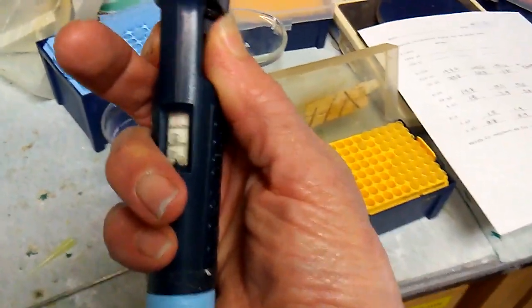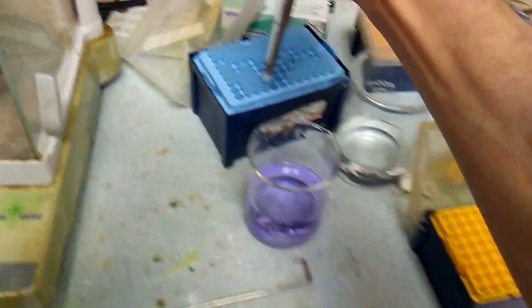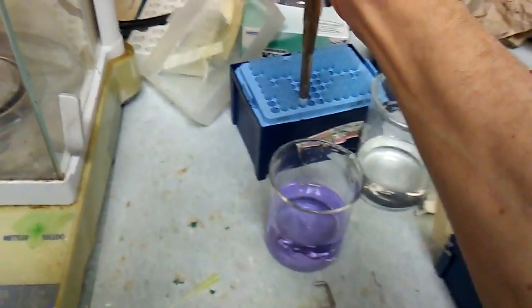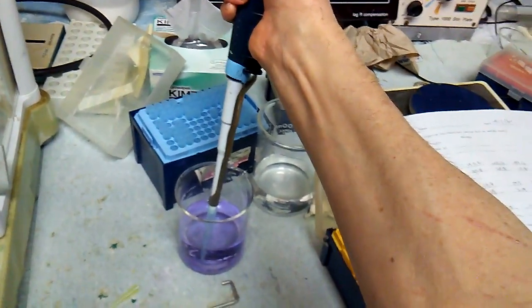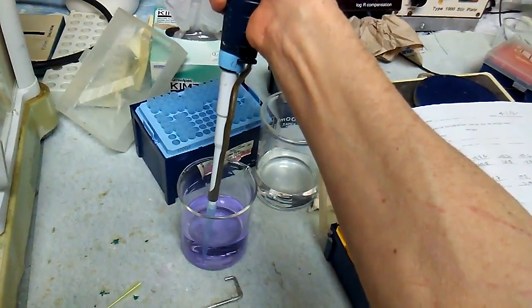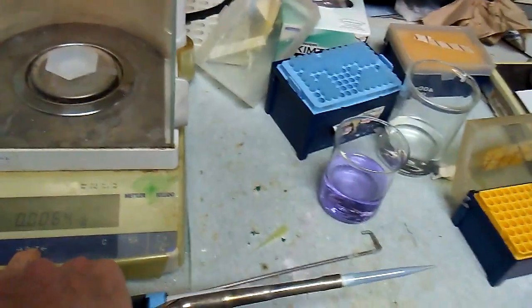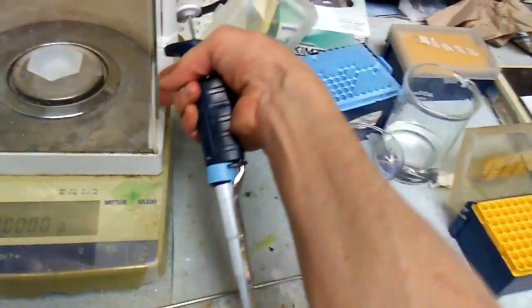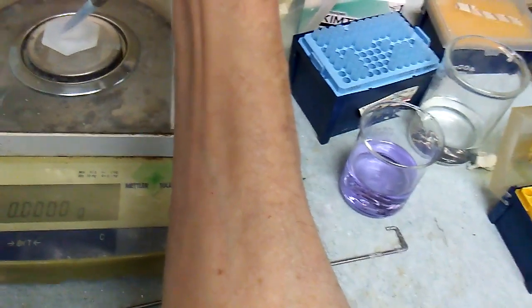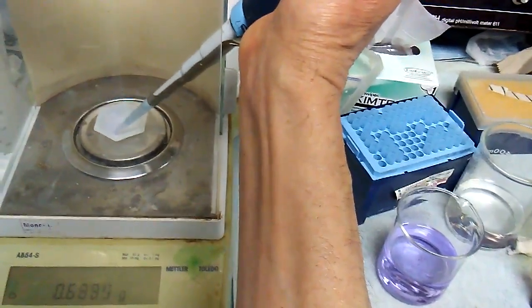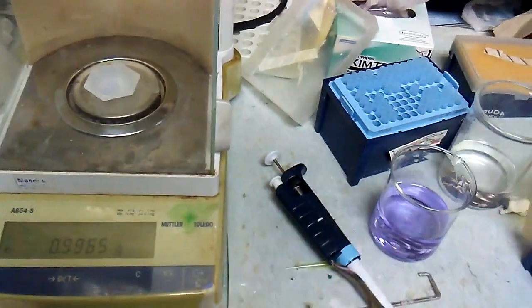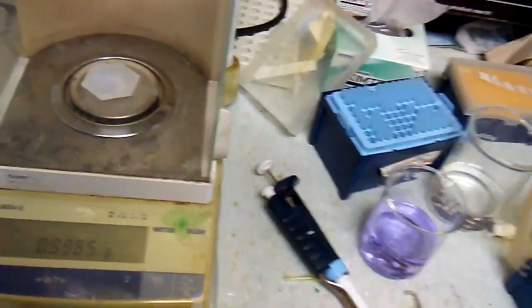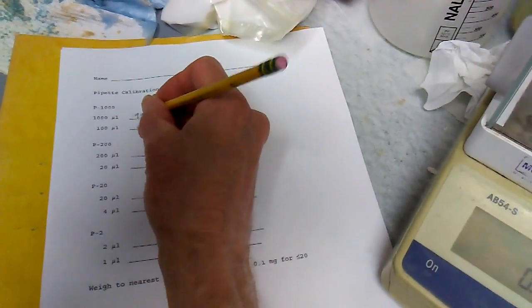So here's a P1000. I'll just adjust that to one milliliter and pipette some distilled water. I've added a little bit of blue dye so you can see it better. And we'll just zero the balance and carefully pipette that onto the weigh boat. Okay, so about 0.996, not too bad.